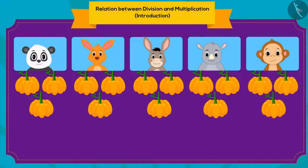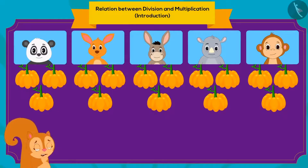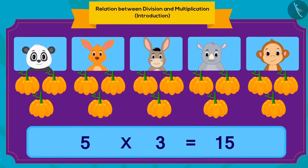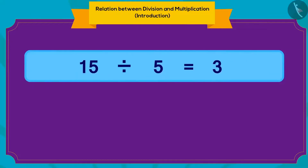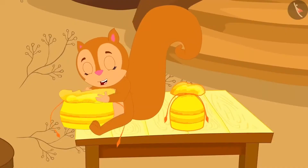Looking closely, we have five friends and each friend will get three pumpkins. We can also write this using multiplication: five multiplied by three is fifteen pumpkins. We can write any division in the form of multiplication. Now Chanda opened her second parcel and found some rice grains in it.